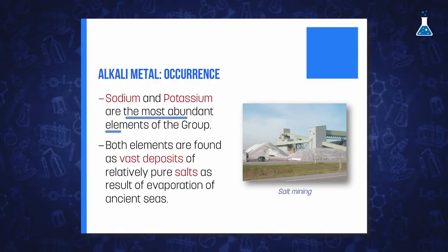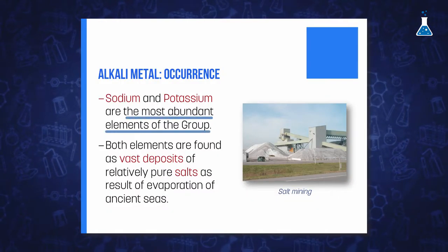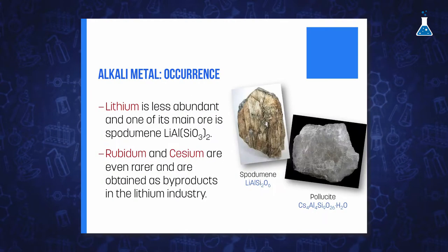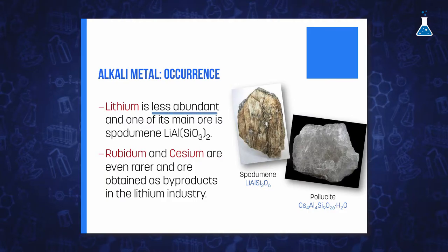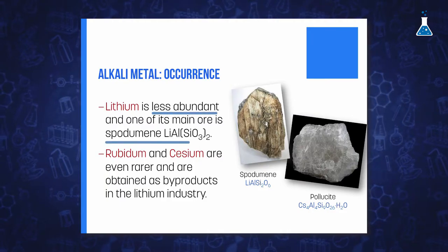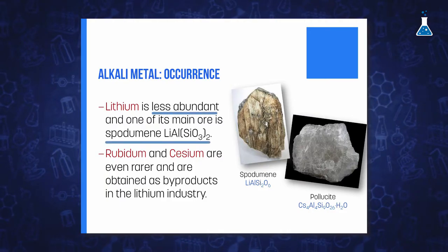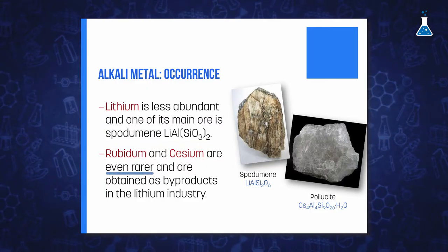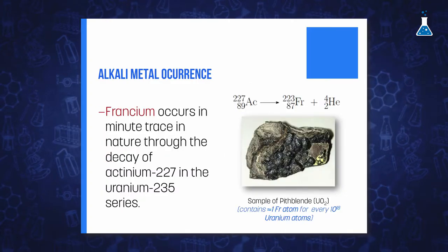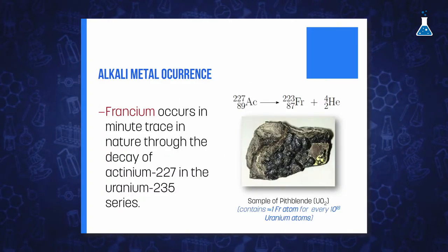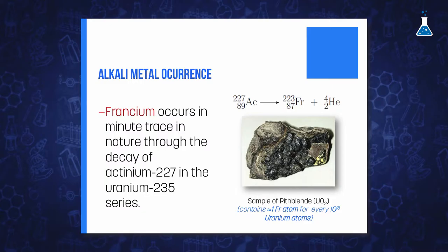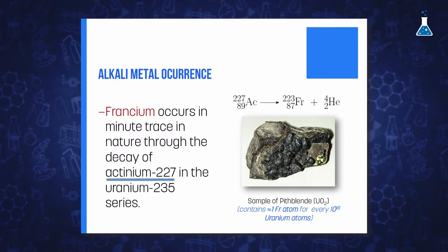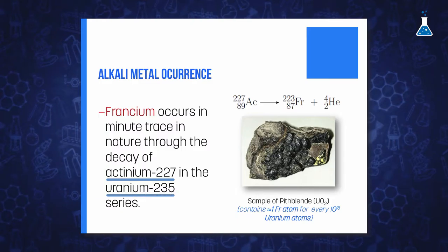Sodium and potassium are the most abundant elements in the group, occurring widely as salts such as chlorides. Lithium, on the other hand, is less abundant and occurs in minerals such as spodumene, which is the main source of this element. Rubidium and cesium are rarer than their lighter metal counterparts. Francium occurs in only minute traces in nature through the rare branching decay of actinium-227 in the uranium-235 series.